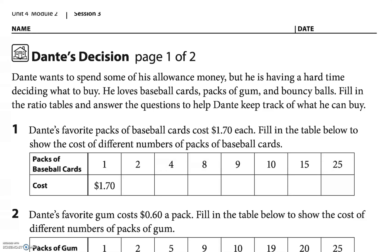Hey everyone, this is Unit 4, Module 2, Session 3 homework. Use this video as long as you need to understand, then pause it, work on it, and use the video to check your answers. Dante wants to spend some of his allowance money but is having a hard time deciding what to buy. He loves baseball cards, packs of gum, and bouncy balls. We're going to fill the ratio tables and answer the questions to help Dante keep track of what he can buy.